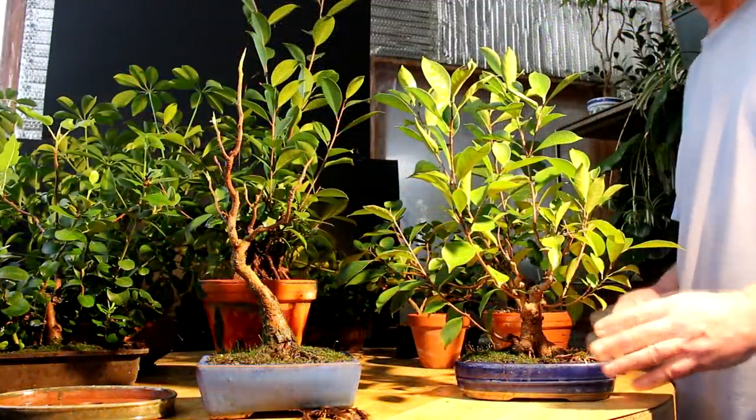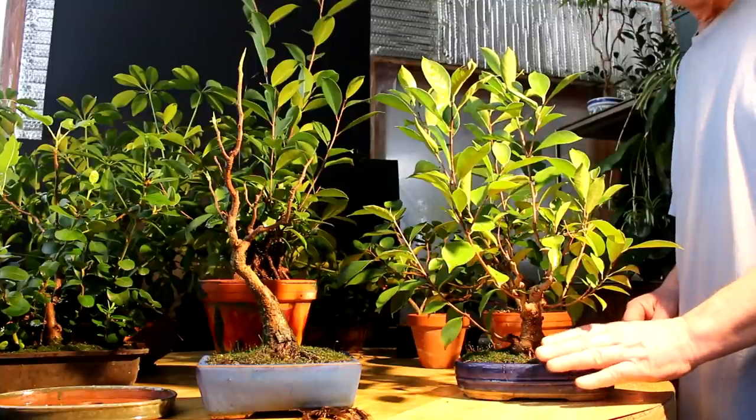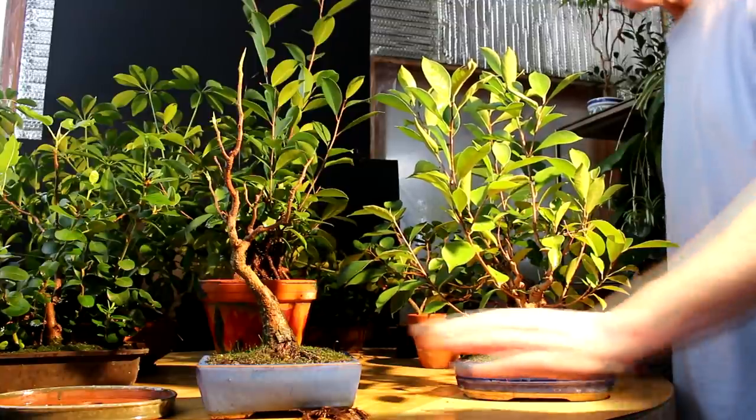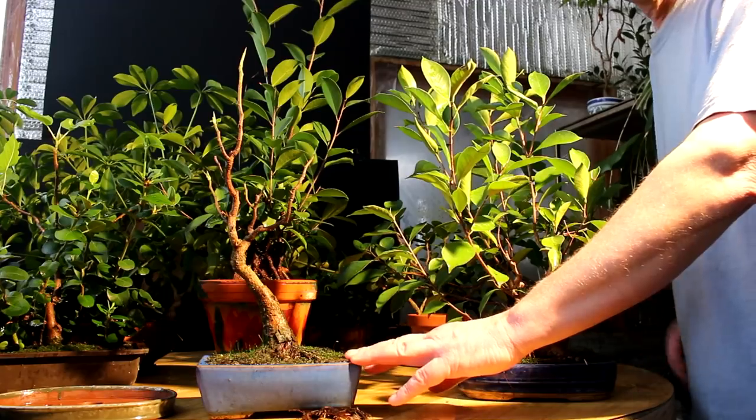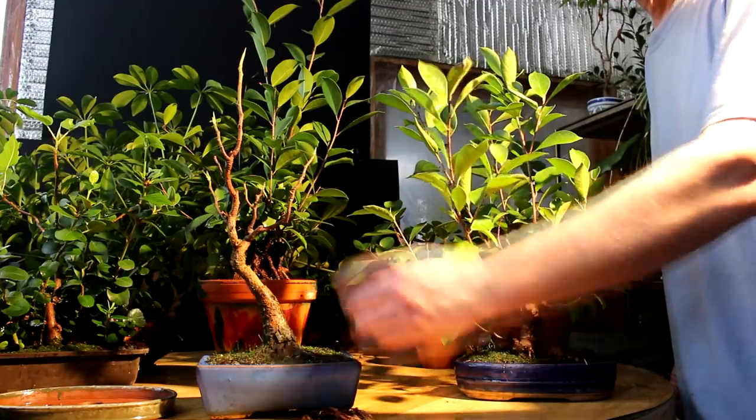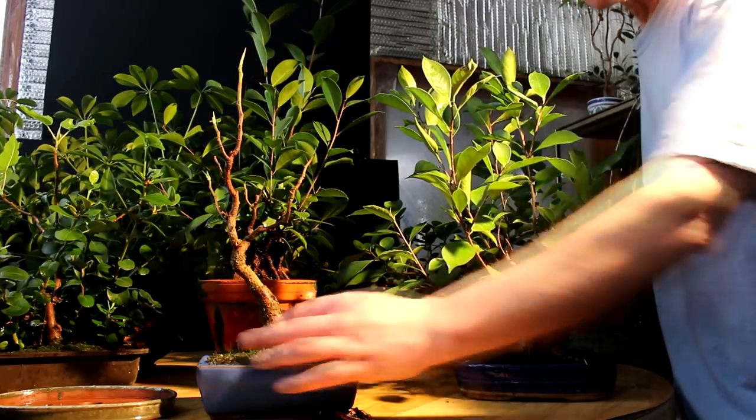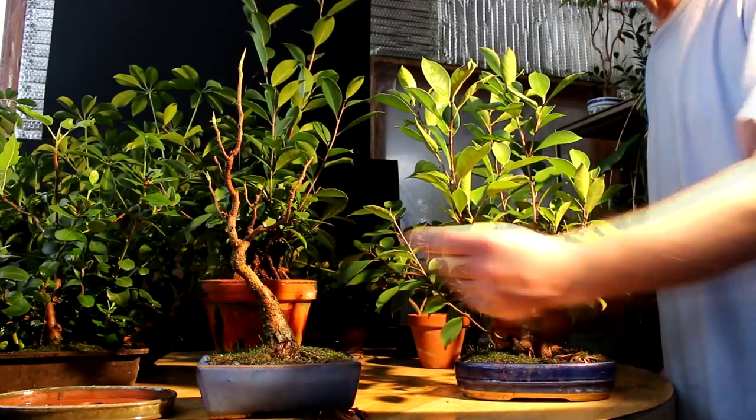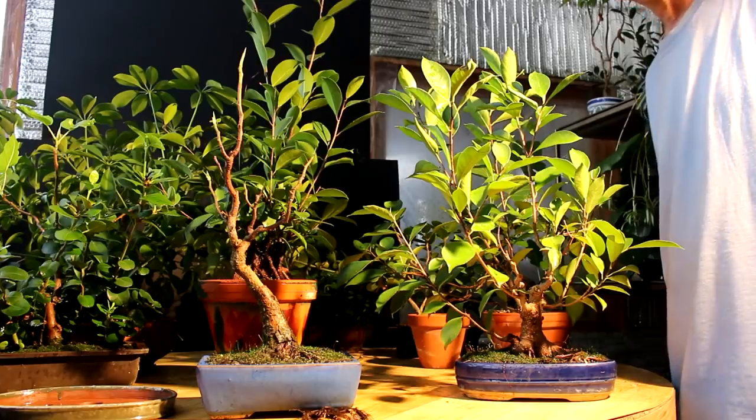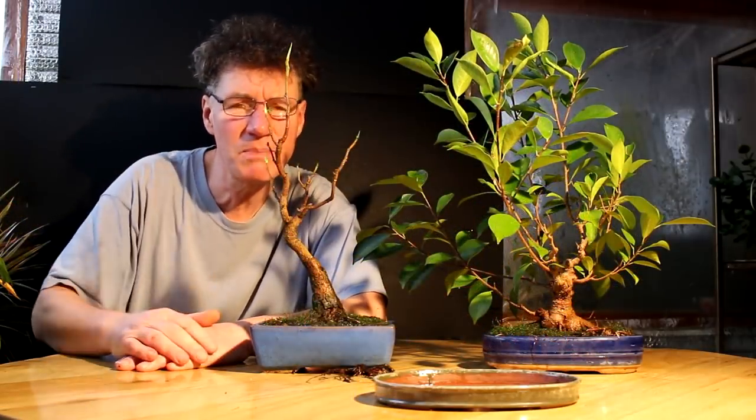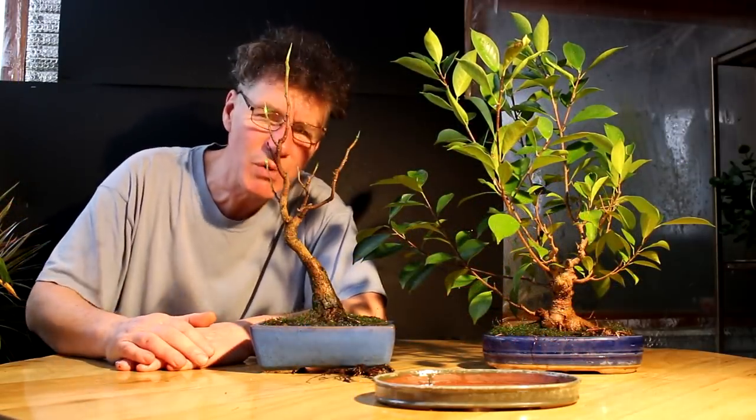The two trees that I think would look best in this pot are my ficus cutting of a cutting or my ficus religiosa which is just coming back into leaf now. They have a nice wide trunk at the base and will look good in this shallow oval pot. Here's my two possible trees. Let's see which one looks better.